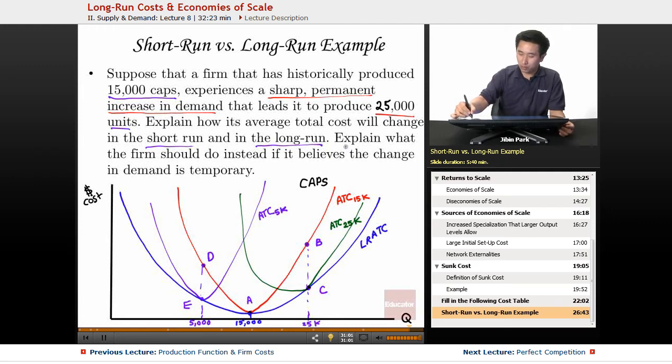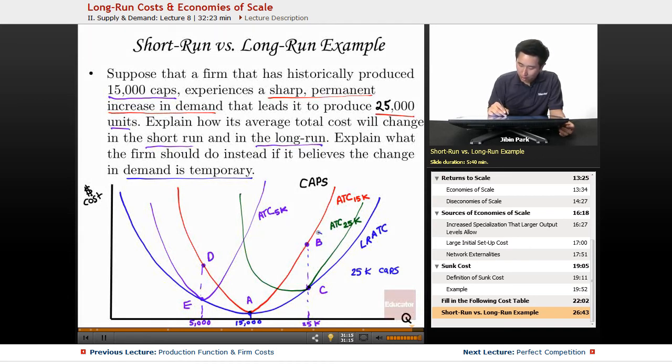Now, the secondary part of this question was explain what the firm should do instead if it believes a change in demand is temporary. So let's say they built 25,000 caps. So obviously the ATC here is higher than in the long run. But if they project that this is only a temporary situation,